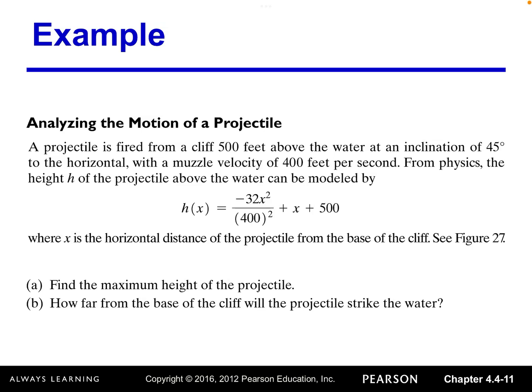Let's look at another example analyzing the motion of a projectile. A projectile is fired from a cliff 500 feet above the water at an inclination of 45 degrees to the horizontal with a muzzle velocity of 400 feet per second. From physics, the height h of the projectile above the water can be modeled by a quadratic function, where x is the horizontal distance of the projectile from the base of the cliff.